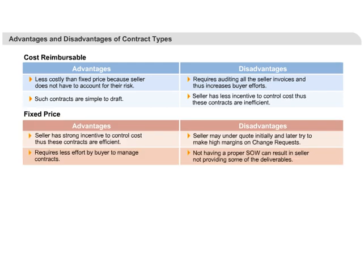In case of a fixed-price contract, the biggest advantage is that the seller tries to control the cost. But the disadvantage is that sellers can underquote initially to get the contract and later try to overcharge if there are any change requests.